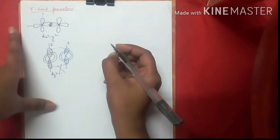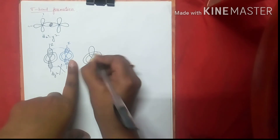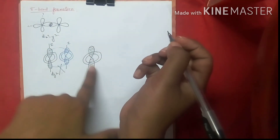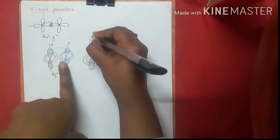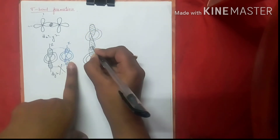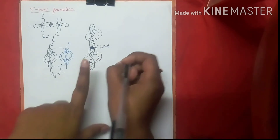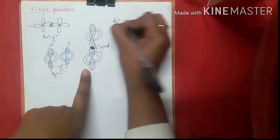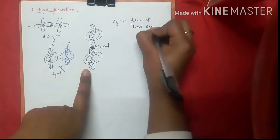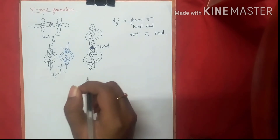Now, can d_z² form a Sigma bond? For Sigma bond, we need head-to-head overlap. For d_z², head-to-head overlap along the z-axis can be done. So a very important conclusion: d_z² forms Sigma bonds and not Pi bonds.